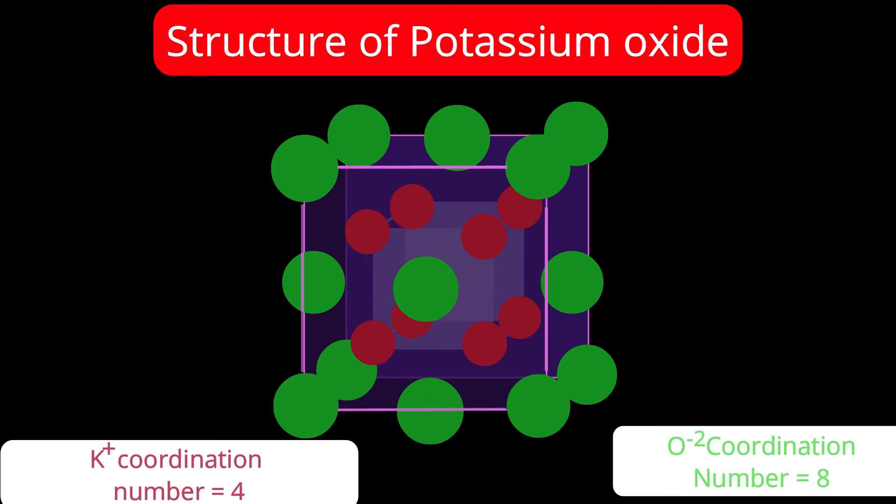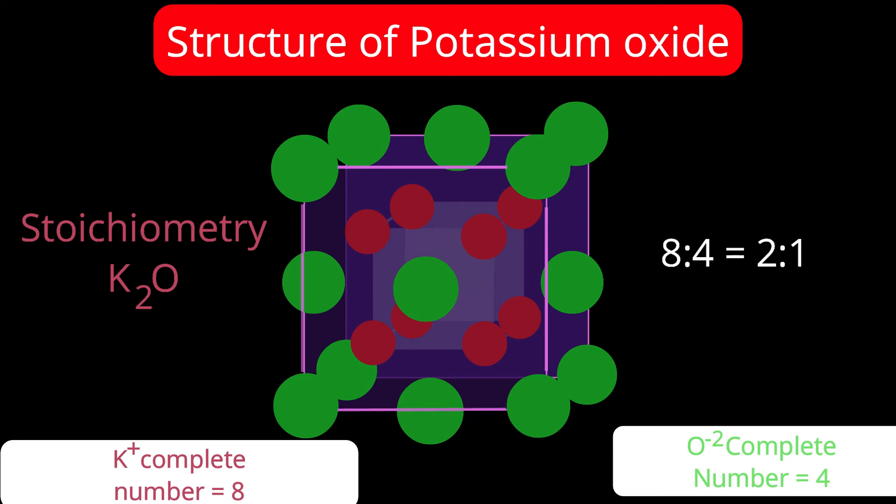Now let us find the stoichiometry. FCC arrangement means total number of oxide ions will be equal to four. And metal ions are tetrahedral voids, and tetrahedral voids are 8 in number, so complete number of the metal ions present is equal to eight. So what is the ratio? Eight is to four. So if I simplify that, two is to one, hence the formula K2O. This approach towards application of radius ratio is proper to understand. This is the best example for that.